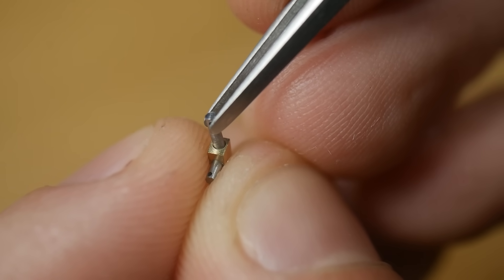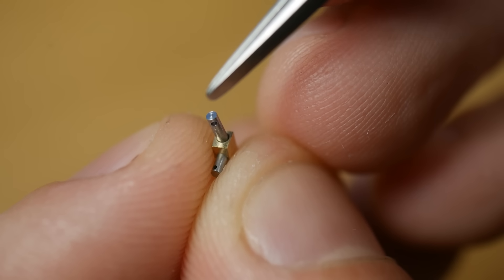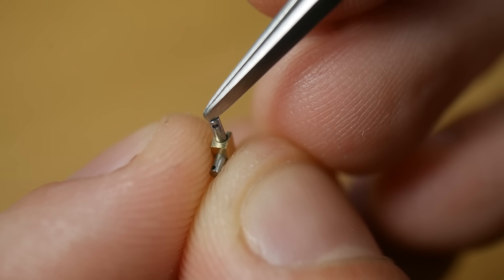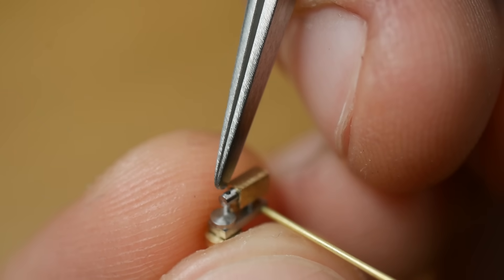Assembly begins with press fitting the flywheel to the crankshaft to form one sub-assembly, and then fitting the piston into the cylinder to form another. These two sub-assemblies fit together and are held together with a spring.